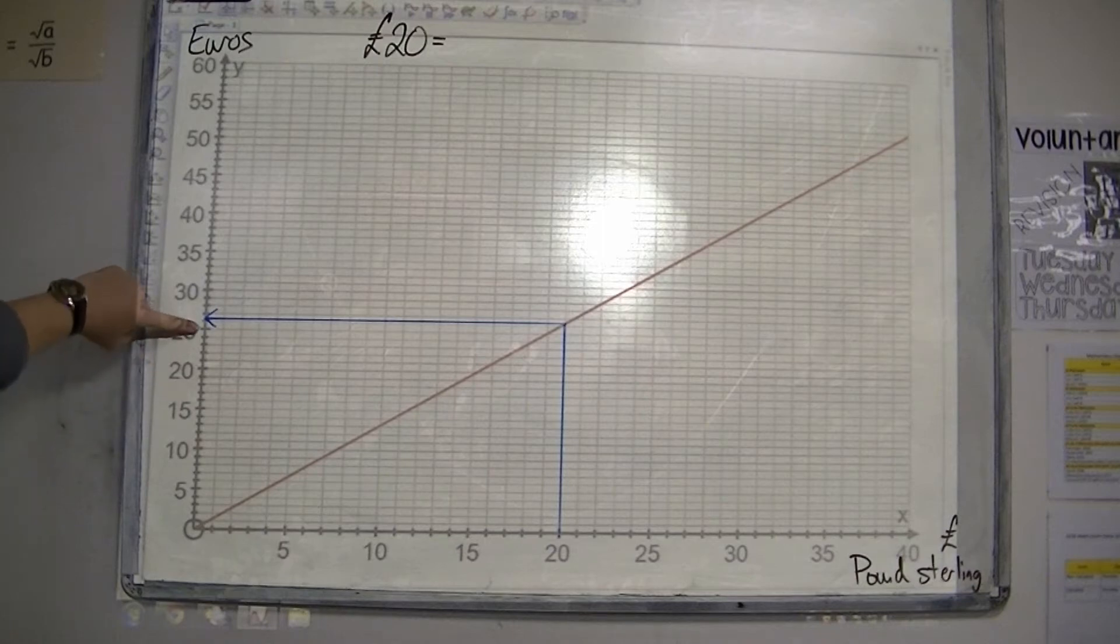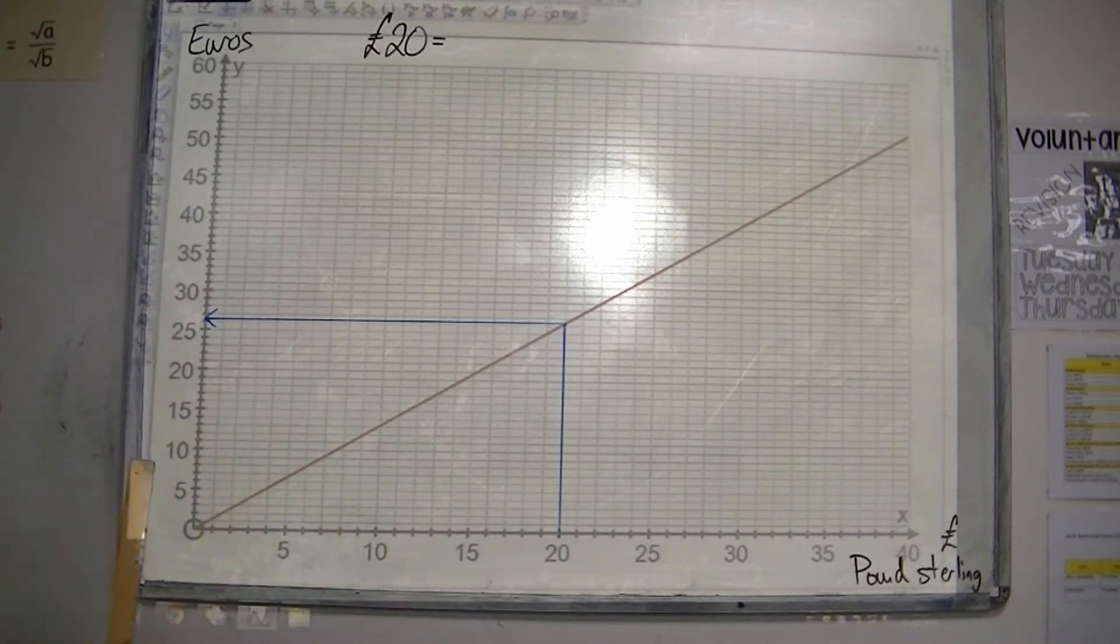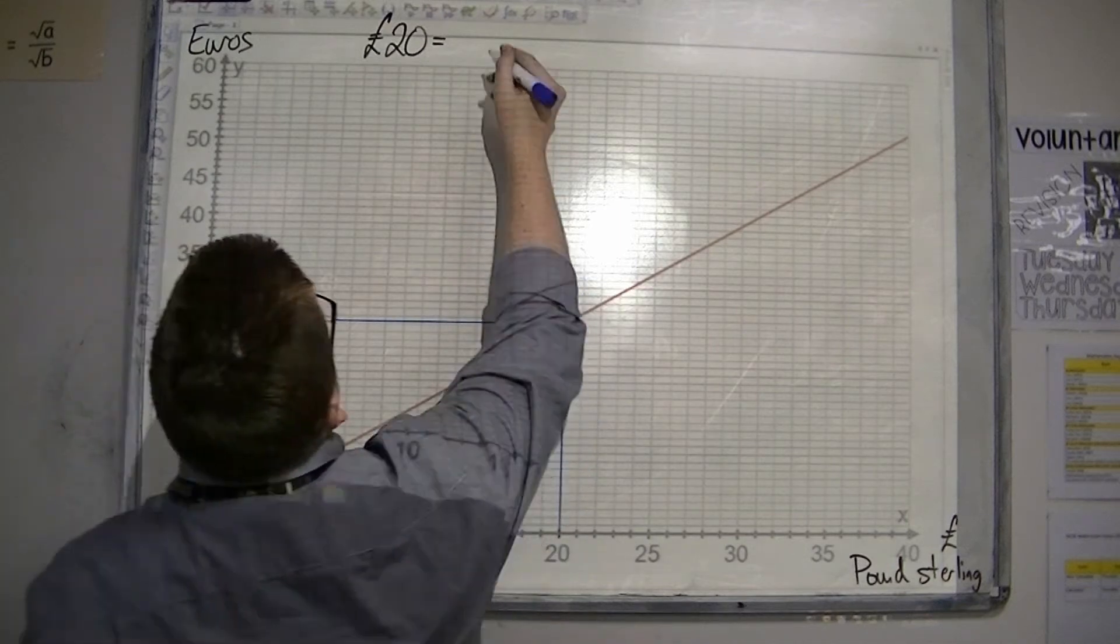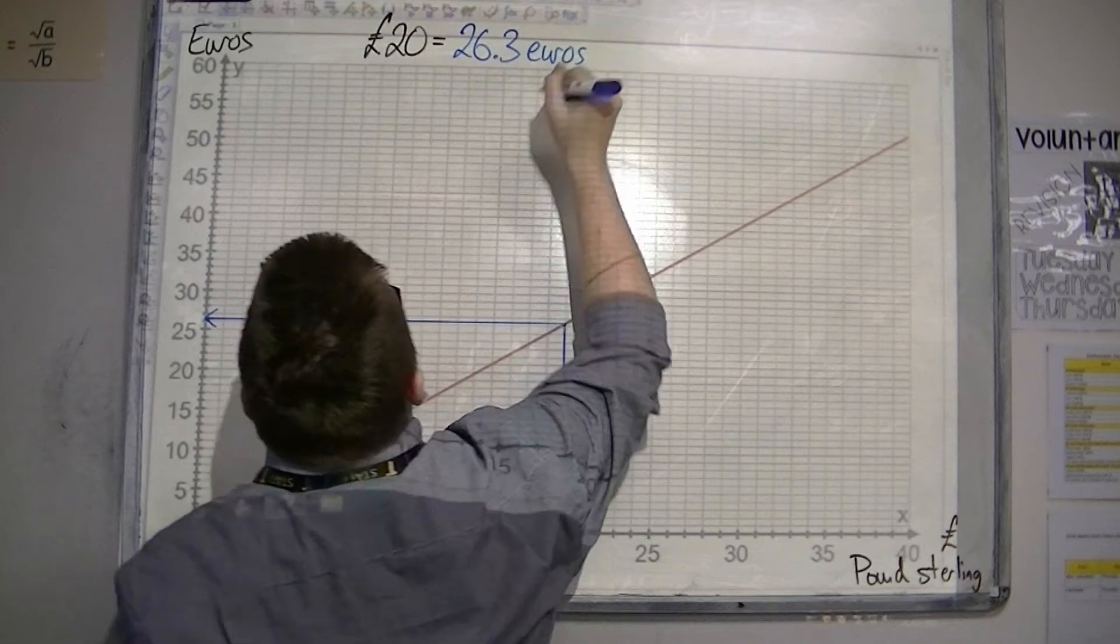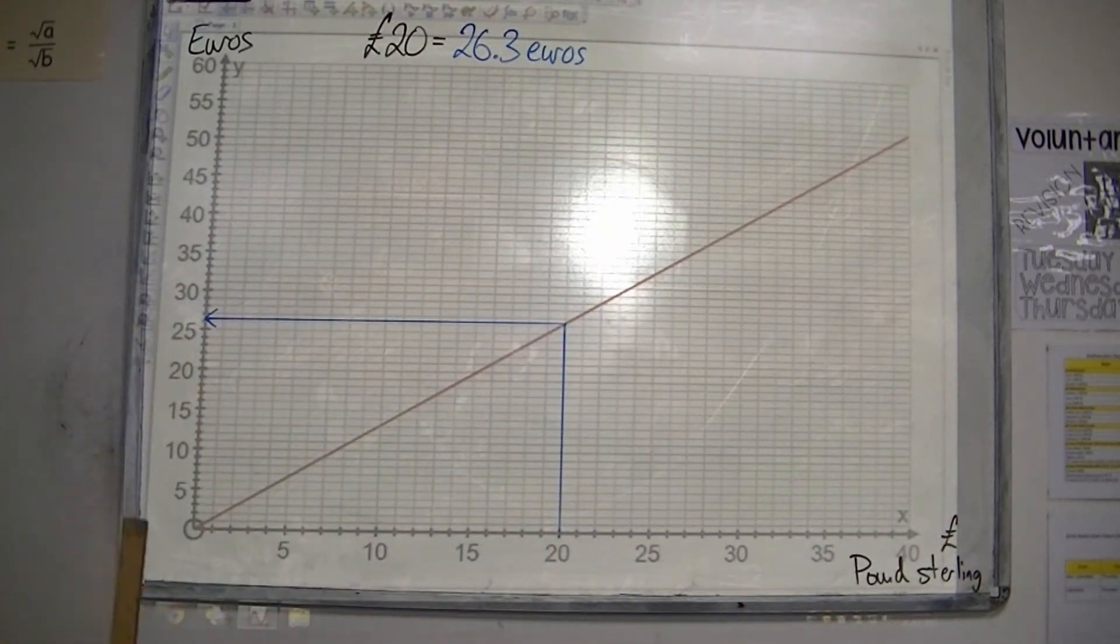So, we've got 25 there. That's 26. So, it's just over 26. So, I'd probably be saying something like 26.3, for example. So, 26.3, just over 26 euros.